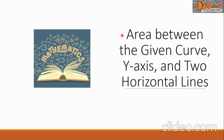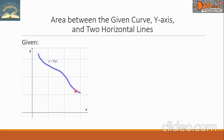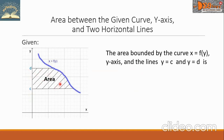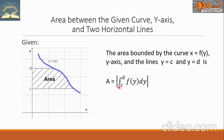Now we're going to study the area between a given curve, the y-axis, and two horizontal lines. Given a curve with formula x equals f of y, with two horizontal lines passing through c and d, the area bounded by x equals f of y, the y-axis, and the lines y equals c and y equals d is given by: A equals the absolute value of the definite integral from c to d of f of y dy.